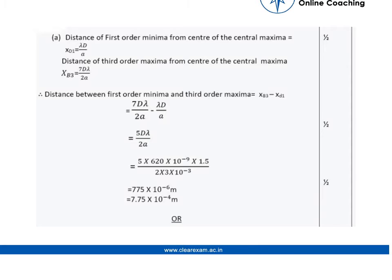Now to solve the numerical, the distance of first order minima from the center of the central maxima is given by the formula X₁ = λd/a, and the distance of third order maxima is 7λd/2a. We need to find the distance between first order minima and third order maxima. So we subtract both and get 5λd/2a.